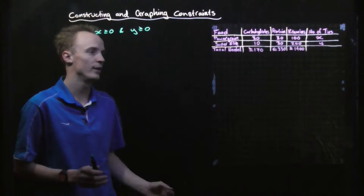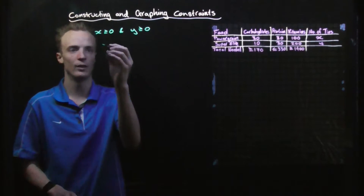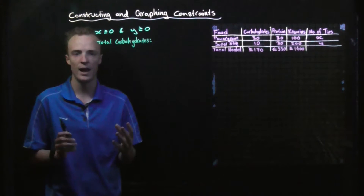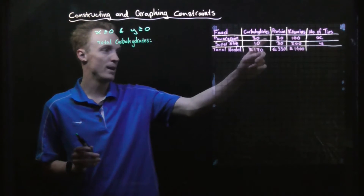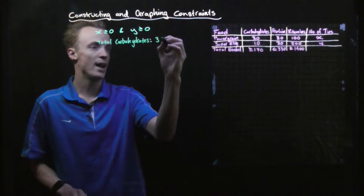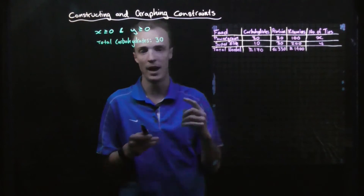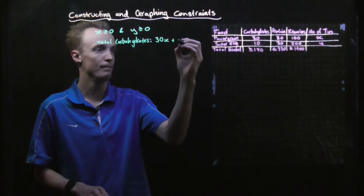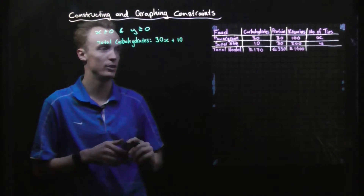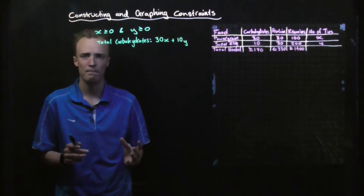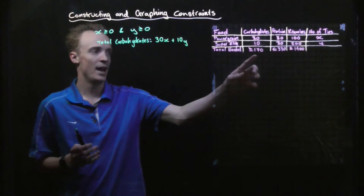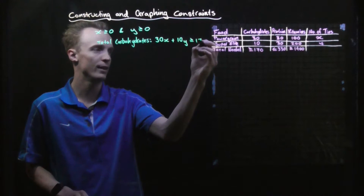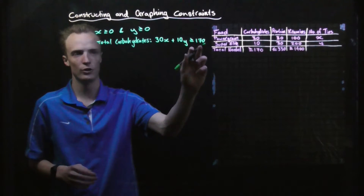Then we need to start breaking it down column by column. The next thing we need to look at is the total carbohydrates. To work out how many carbohydrates you would have in total, you take the amount of carbohydrates in Power Grain — 30 — and multiply it by the number of tins, which is X, giving 30X. You add that to the 10 units of carbohydrate in Super Elite multiplied by Y, giving 10Y. We need at least 170, so the constraint is 30X + 10Y ≥ 170.